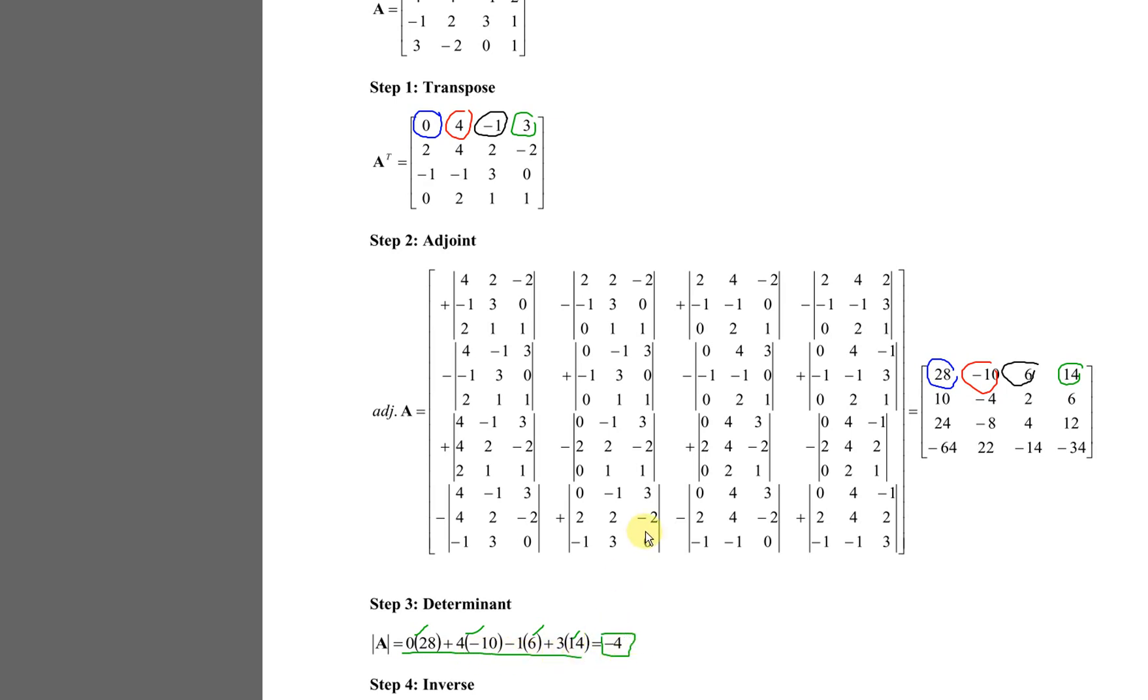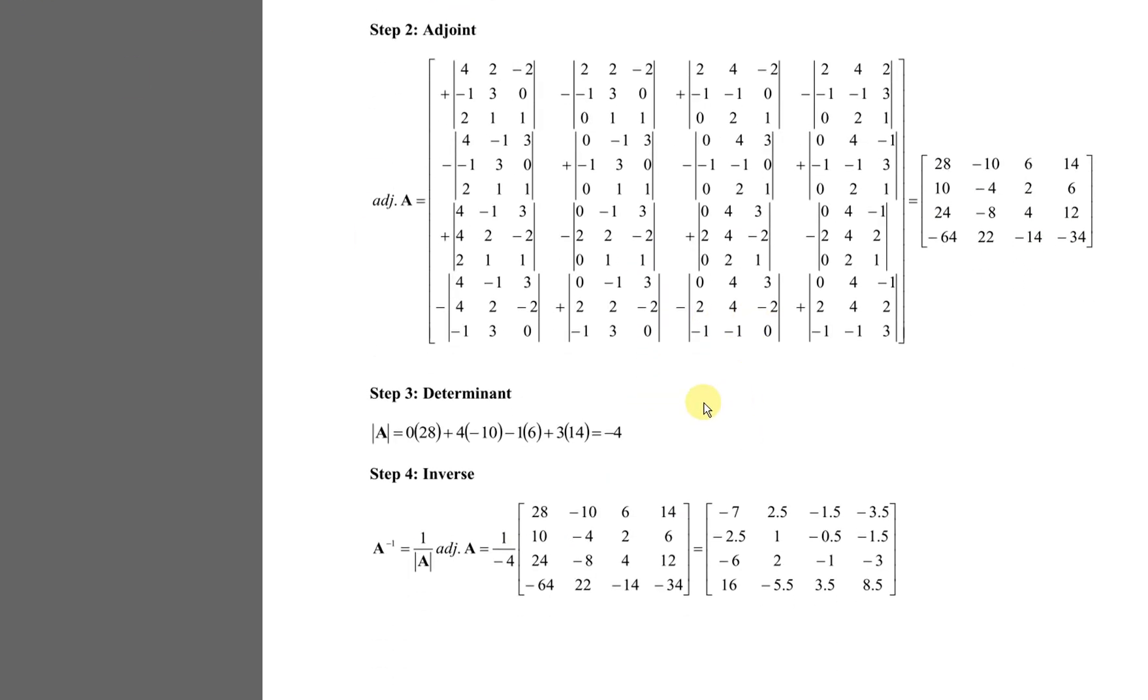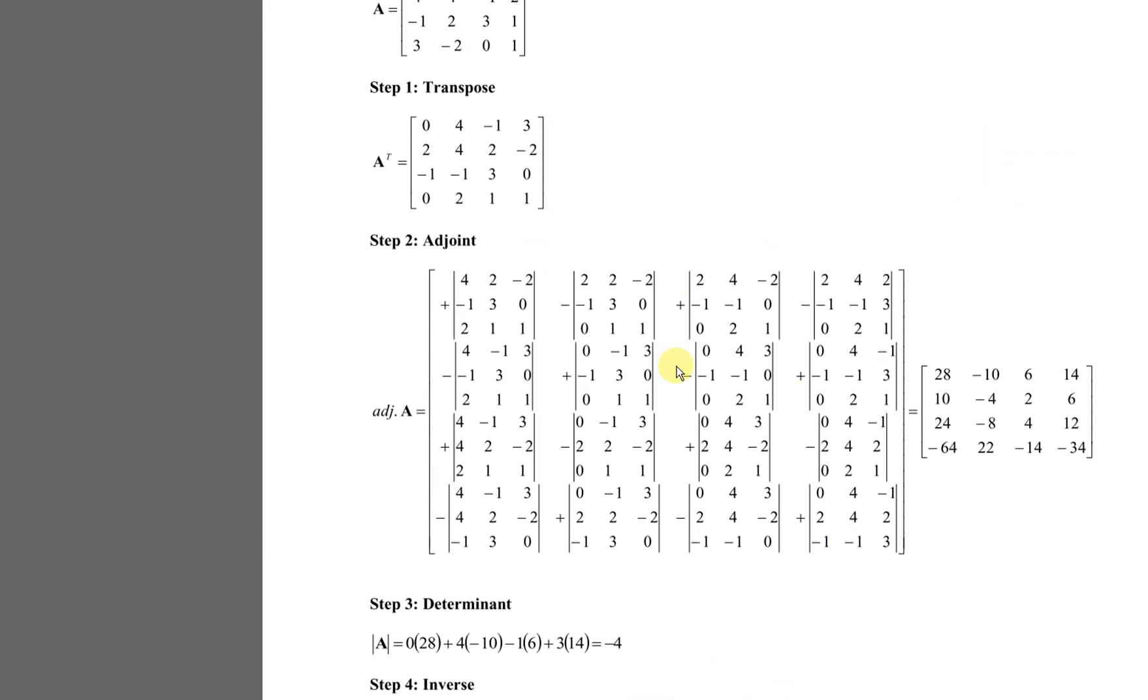Then the last step here is we take 1 over determinant, meaning 1 over negative 4 times the adjoint. Then we obtain the inverse. So we have the steps as well.